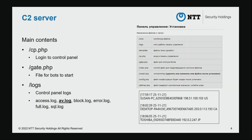cp.php is a login page to access the control panel. Next, gate.php is a file for the bots to connect. And there is a logs directory containing logs about the control panel. For this study, we used av.log to check the trend of the attack cases. This av.log contains information about infected hosts, as shown here.